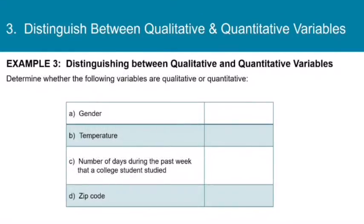As an example, let's consider a few different variables and decide if they are qualitative or quantitative. First up, gender. So like male or female. That's obviously not numeric, so it's going to be qualitative.